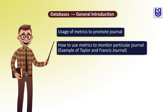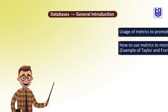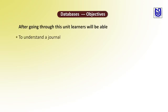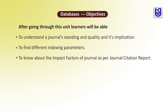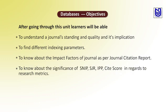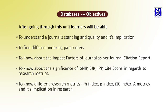Going through this unit, you will be able to understand a journal's standing, quality, and its implications; to find the different indexing parameters; to know about the impact factors of a journal as per Journal Citation Report; to know about the significance of SNIP, SJR, IPP, and CiteScore in regard to research metrics; and to know the different metrics — H-Index, G-Index, I-10-Index, Altmetrics, and their integration in research.